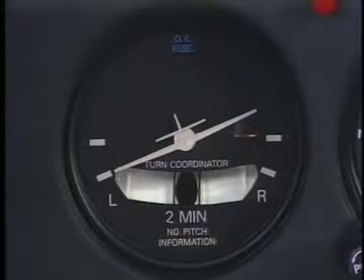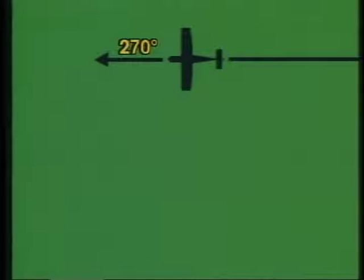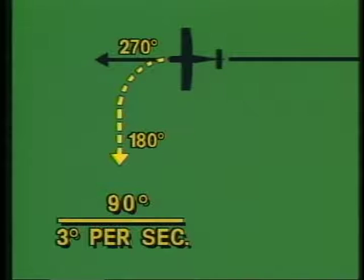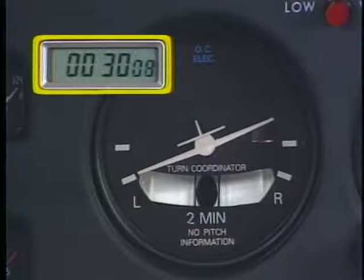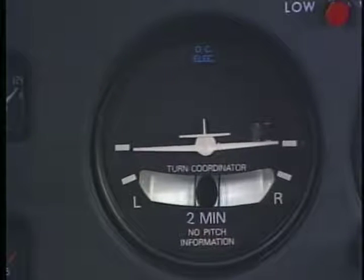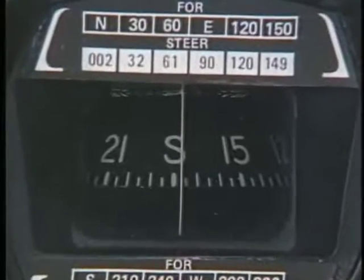Remember, with the wing aligned on the turn coordinator, your rate of turn will be three degrees per second. You can use this figure to calculate how many seconds it will take to turn to a new heading. For example, let's say that you were on a heading of 270 degrees and want to turn to 180. That's a heading change of 90 degrees. At a turn rate of three degrees per second, it will take you 30 seconds to reach the new heading. After timing for 30 seconds, begin your rollout. When stabilized in level flight, read the magnetic compass. You may have to make small adjustments to get to the exact heading you desire.